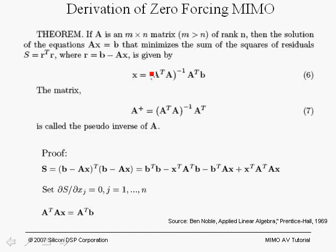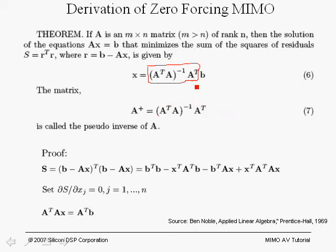We're going to show the proof in a moment. Consider the expression (A-transpose A)-inverse A-transpose — we denote this by A-plus, called the pseudo-inverse of matrix A. Note that we're dealing with a rectangular matrix, so unlike a square matrix we don't have a direct inverse. However, A-transpose A is a square matrix and we can form its inverse. So A-plus times B gives our estimate X.